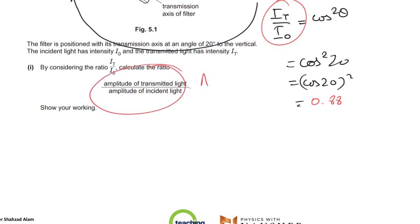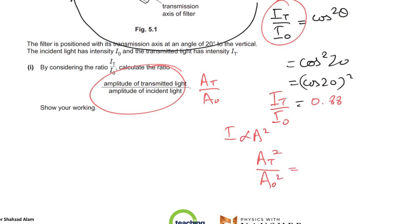Now, to find the amplitude ratio A_T over A-naught: since intensity is proportional to amplitude squared, A_T squared over A-naught squared equals 0.88, which is the intensity ratio. So you take the square root of 0.88, and the answer is A_T over A-naught equals 0.939, or approximately 0.94.